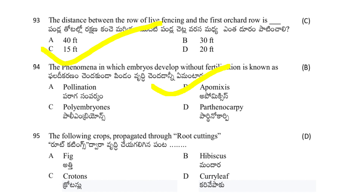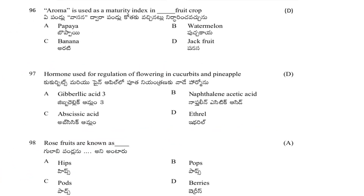Which of the following crops is propagated through root cuttings? Options: fig, hibiscus, crotons, or curry leaf. The answer is D — curry leaf.